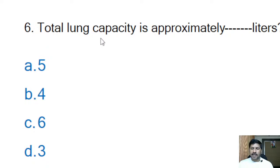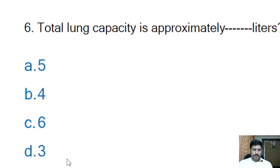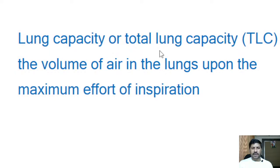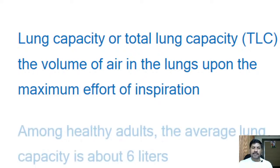Sixth question: the total lung capacity is approximately how many liters? Options: five, four, six, three. Correct answer is six liters. Total lung capacity is the volume of air in the lungs upon maximum effort of inspiration — for a healthy adult it is approximately six liters.